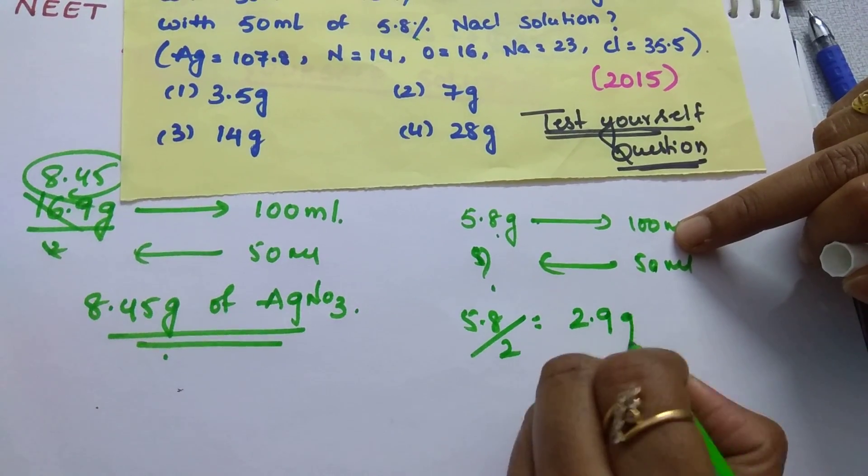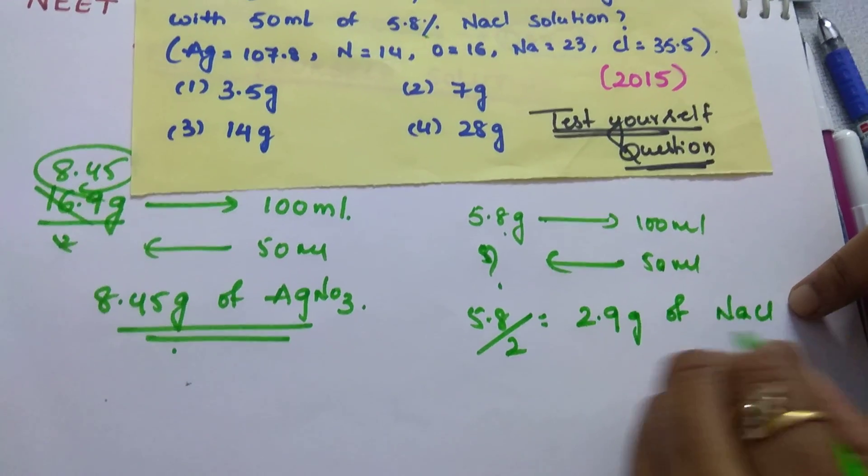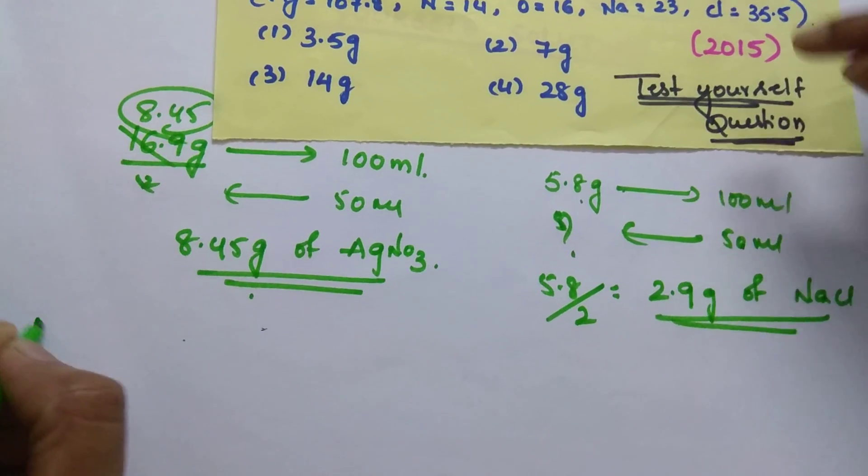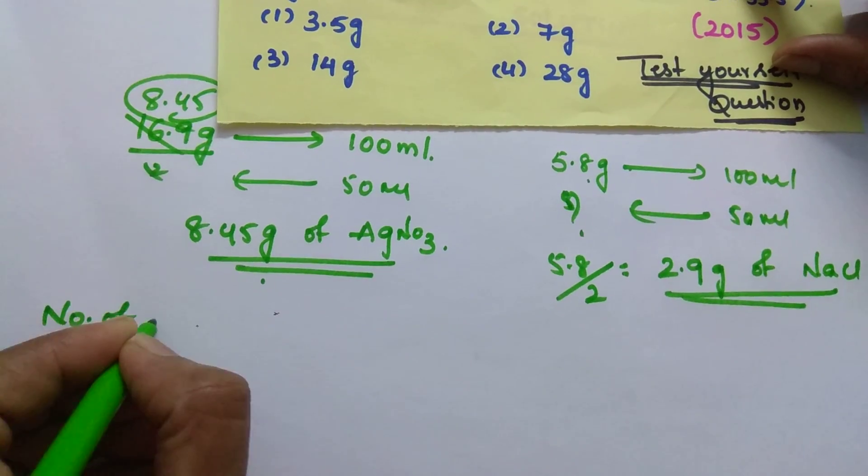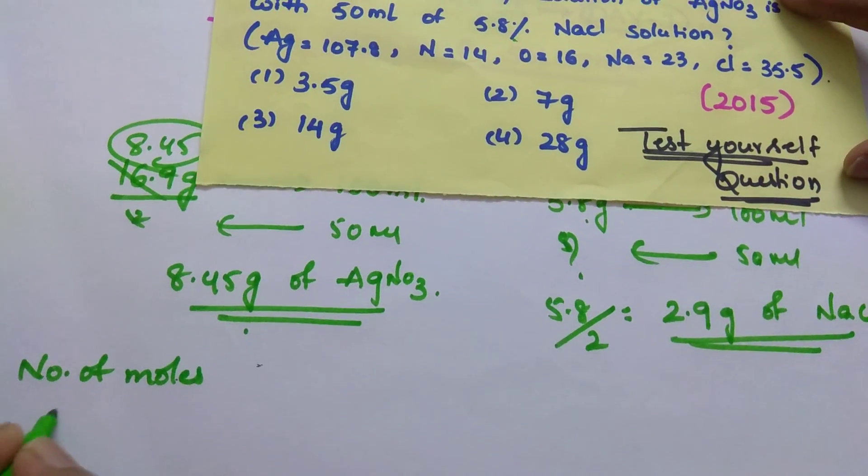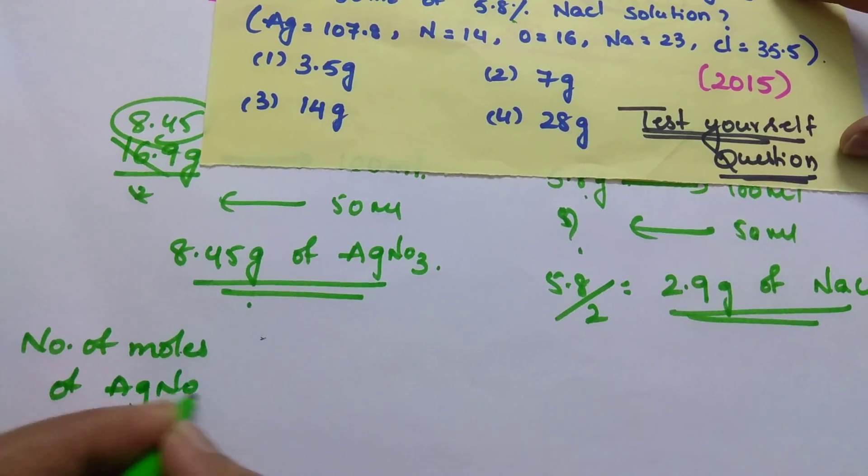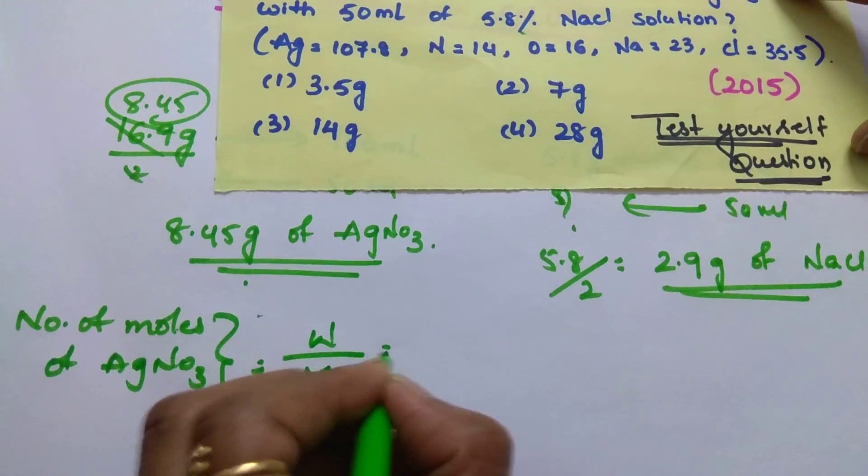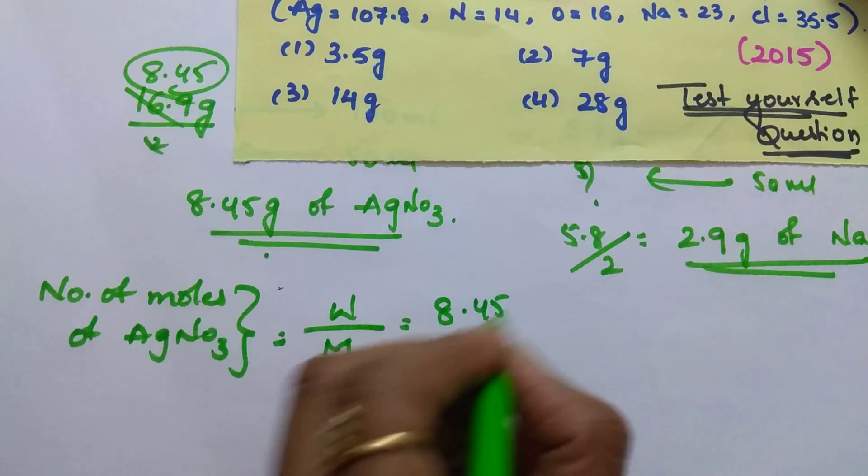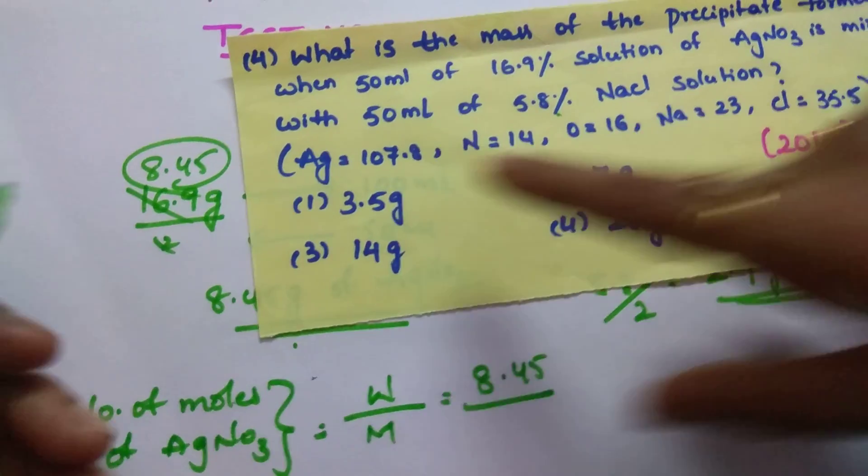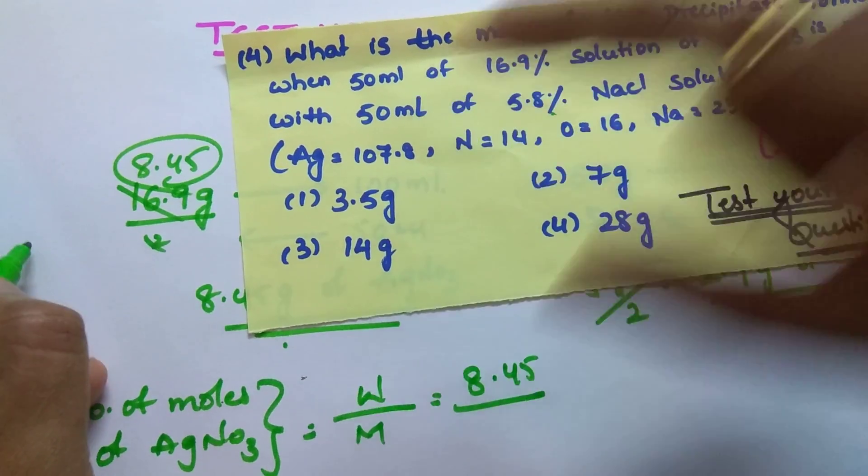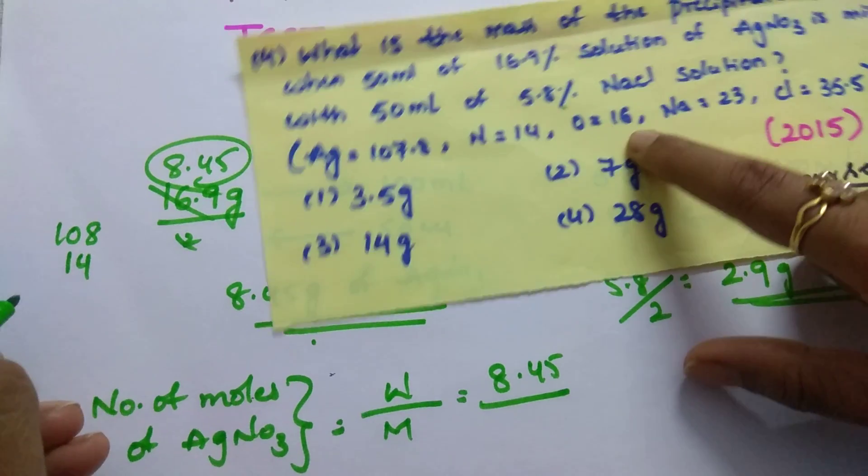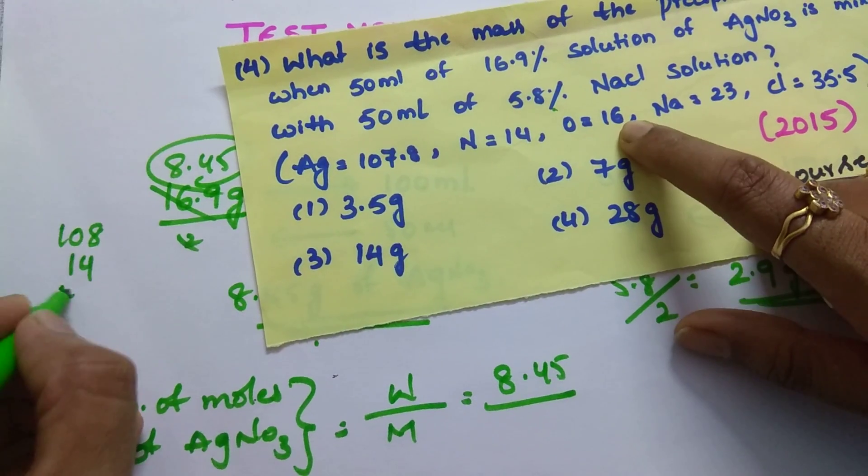Once you do this immediately you should calculate number of moles. Number of moles of AgNO3 equal to weight by molecular weight. Weight is 8.45. Molecular weight of AgNO3, everything is given here 107.8. Take it as 108 round off. Nitrogen is 14. 3 oxygens is there, 3 into 16, so 48.